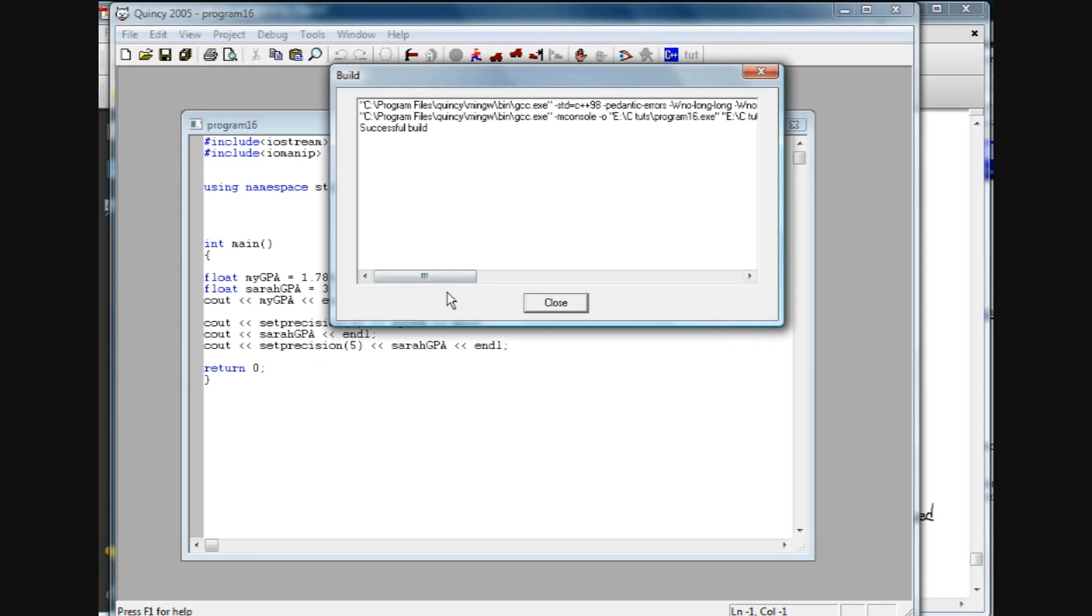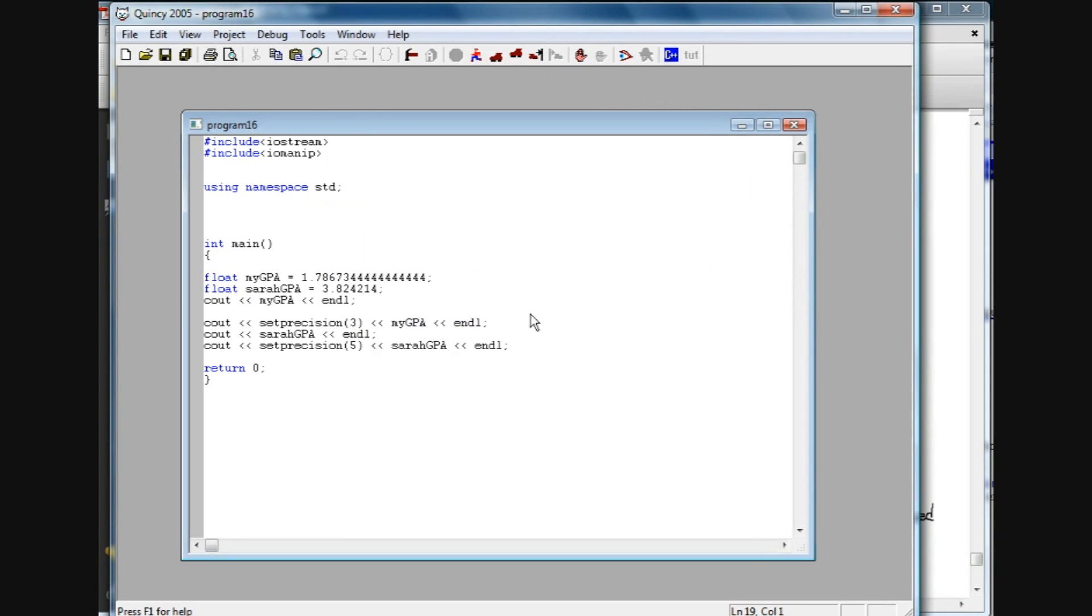So that's pretty much it as far as the setprecision manipulator. Main thing to remember is the rounding aspect of it, and to definitely pound include the iomanip.